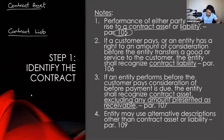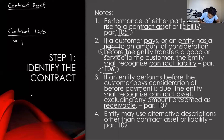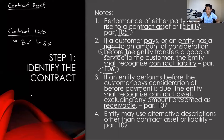According to paragraph 106: if a customer pays or an entity has a right to an amount of consideration before the entity transfers a good or service to the customer, the entity shall recognize a contract liability. In other words, if the buyer has already performed — paid or is required to pay — but the seller has not yet delivered goods or rendered services, we recognize a contract liability.